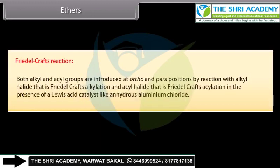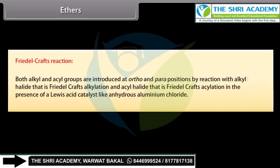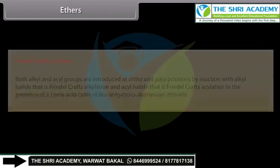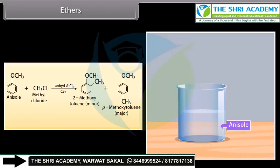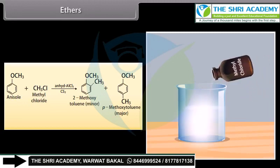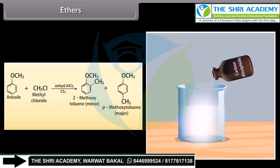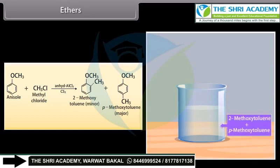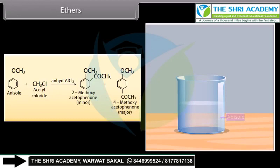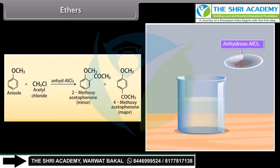Friedel-Crafts reaction: Both alkyl and acyl groups are introduced at ortho and para positions by reaction with alkyl halide — Friedel-Crafts alkylation — and acyl halide — Friedel-Crafts acylation — in the presence of a Lewis acid catalyst like anhydrous aluminium chloride. Methyl chloride reacts with anisole in the presence of anhydrous aluminium chloride and carbon disulfide and forms 2-methoxytoluene and para-methoxytoluene. Acetyl chloride reacts with anisole in the presence of anhydrous aluminium chloride and forms 2-methoxyacetophenone and 4-methoxyacetophenone.